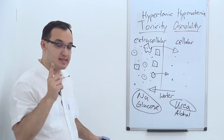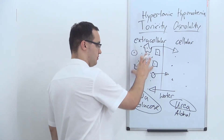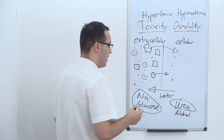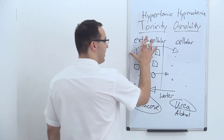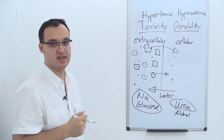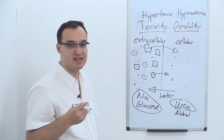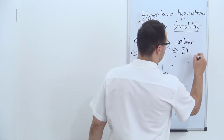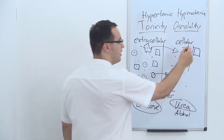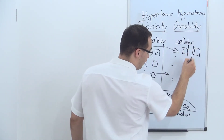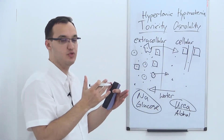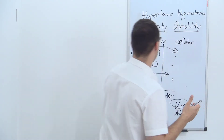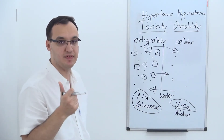Why does this happen? Take glucose as an example. If you have a lot of glucose in the extracellular space — for example, you eat a lot of sugar and get a lot of glucose in your blood — what does extracellular mean? Blood flows outside of your cells. If you have two cells here with an artery, the extracellular space is the artery and the intracellular space is inside the cells on either side.